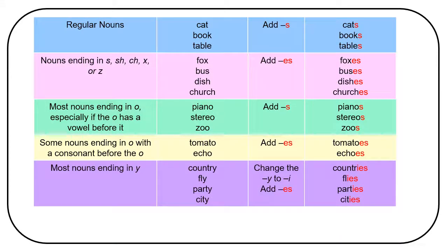Most nouns ending in y, like country, fly, party, city, change the y to i and add es. Countries, flies, parties, cities.